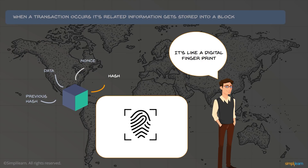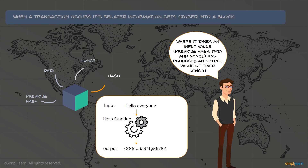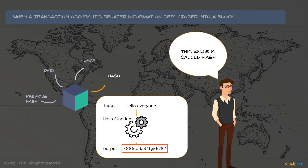Hash is like a digital fingerprint of the current block. It takes an input value of the previous hash, the data, and the nonce, and produces an output value of fixed length. The Bitcoin network uses the SHA-256 hashing algorithm to generate a 256-bit length hash, and the output looks something like a hexadecimal value.